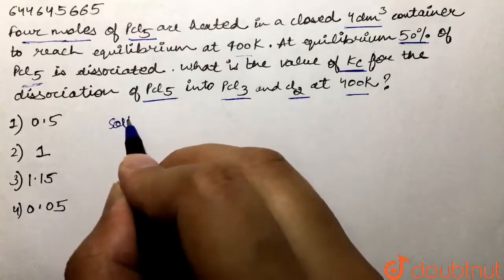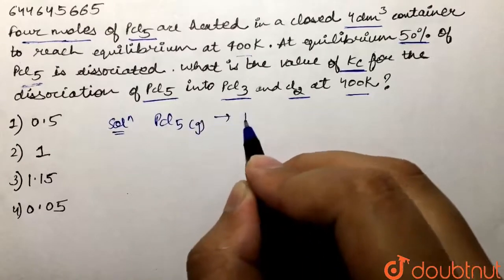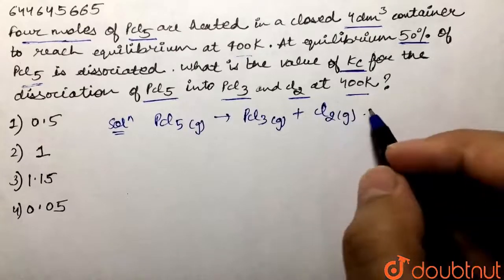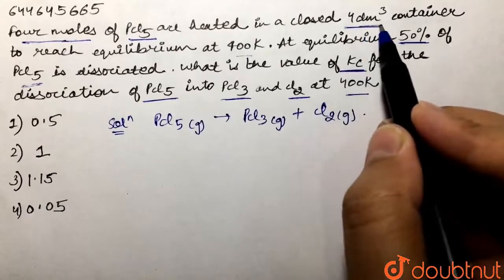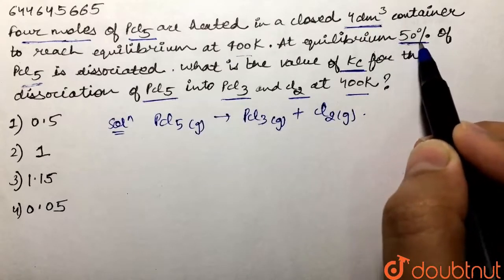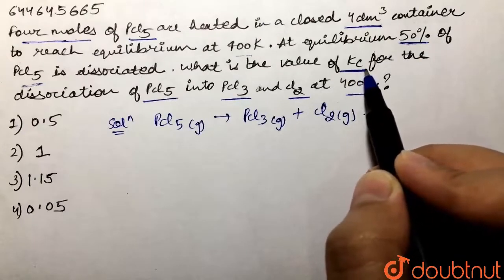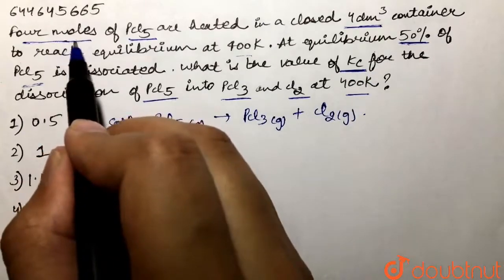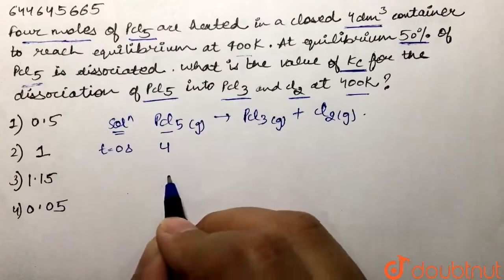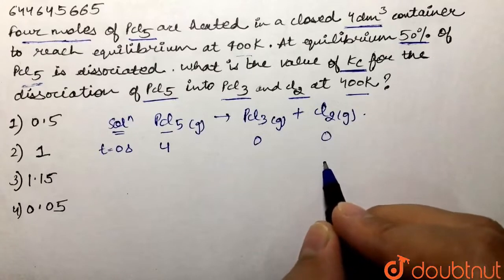First of all, we will write the reaction. We have PCl5 (gaseous) forming PCl3 (gaseous) and chlorine (gaseous). We are given the volume of the container: 4 decimeter cube. At equilibrium, 50% of PCl5 gets dissociated, and we need to find Kc. Initially, 4 moles of PCl5 are taken at T = 0, and we do not have any products yet.